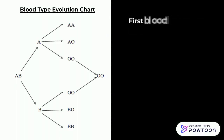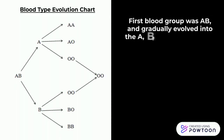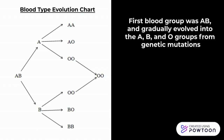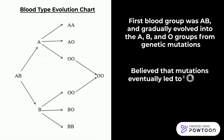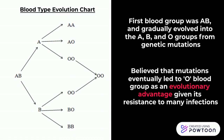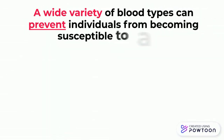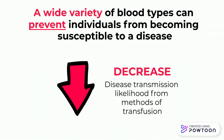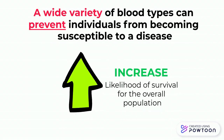The most common theory suggesting the formation of blood groups is that the first blood group was AB, which gradually evolved into the A, B, and O groups due to multiple genetic mutations that have occurred over the years. Researchers believe the mutations leading to eventual formations of type O blood occurred as an evolutionary advantage, because type O is the most resistant against infectious disease. Having a wide variety of blood types is beneficial, as it can help prevent individuals from becoming susceptible to certain diseases and can decrease the likelihood of disease transmission through transfusion, thereby increasing the likelihood of the survival of the overall population.